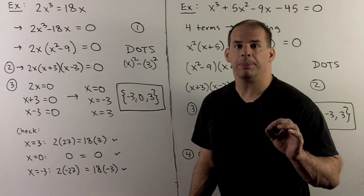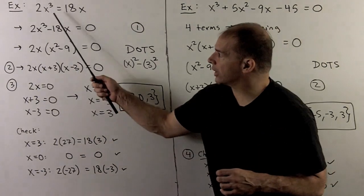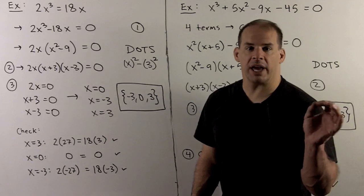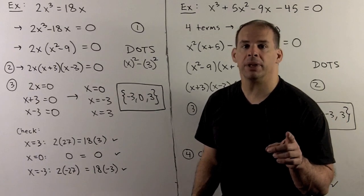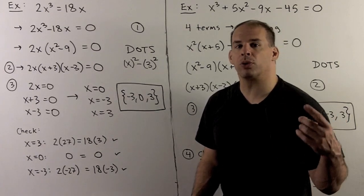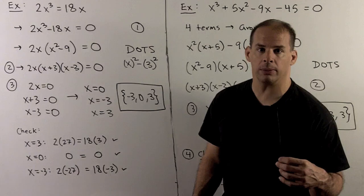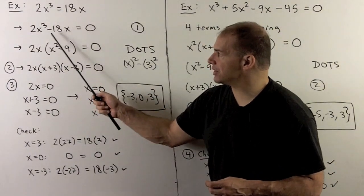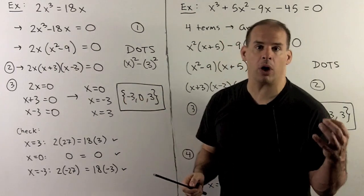Next example, I want to find all solutions to the equation 2x cubed equals 18x. Note here, we cancel a 2 on both sides with no penalty. But if we cancel x's, we'll throw away the solution x equals zero. Now, we push everything to one side. I get 2x cubed minus 18x is zero. So that's step one.